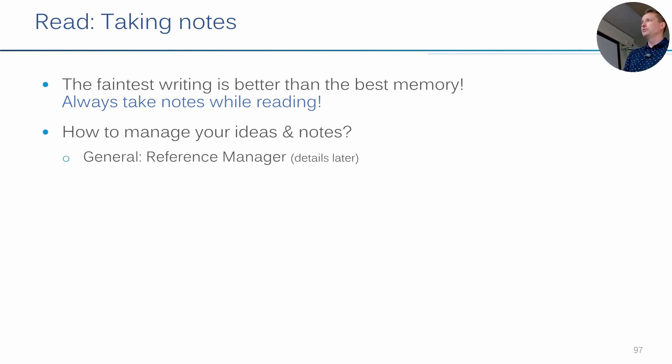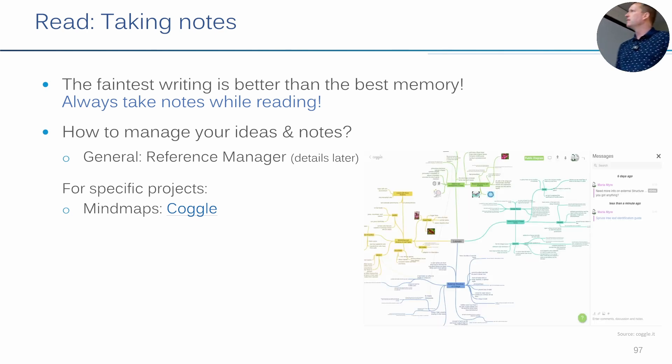Okay, of course, at some point we need to take notes. I showed you some steps during the process where this is appropriate. There's a nice saying, the faintest writing is better than the best memory. It's definitely true for me, I don't know how good your memory is, but I need to write down everything. So always take notes while reading, really reading. We already mentioned how to best manage your ideas and notes. I recommend the reference manager, Zotero, a very good option. If you're not the reference manager type, for whatever reason, if you're more a mind map type, I can recommend an open tool, Coggle, that is very nice also to collaborate with others. I think I have a picture, yeah, it looks like this. So it's a mind mapping tool, very easy to import and export things. I can recommend it.